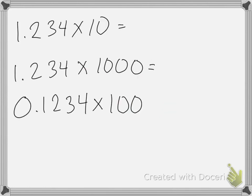So if I want to multiply 1.234 by 10, there's one zero, so that means I'm going to move the decimal place one place to the right. So the answer is going to be 12.34.